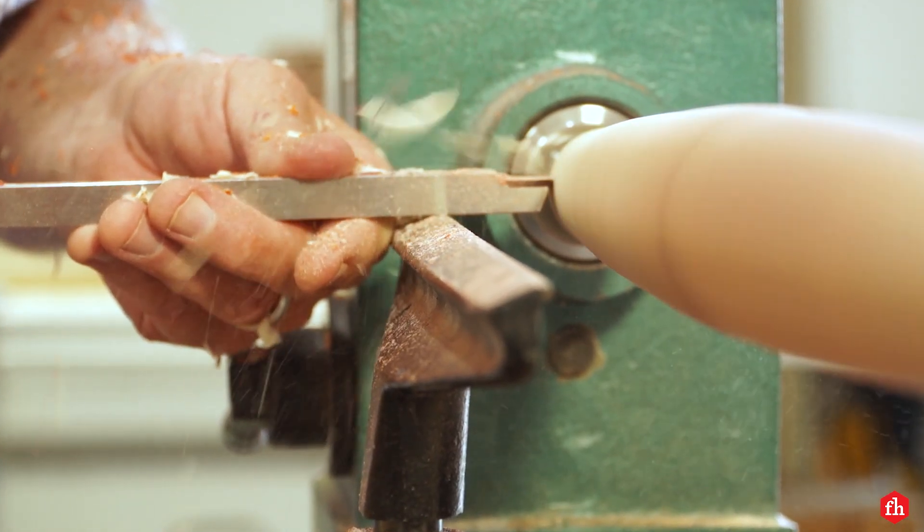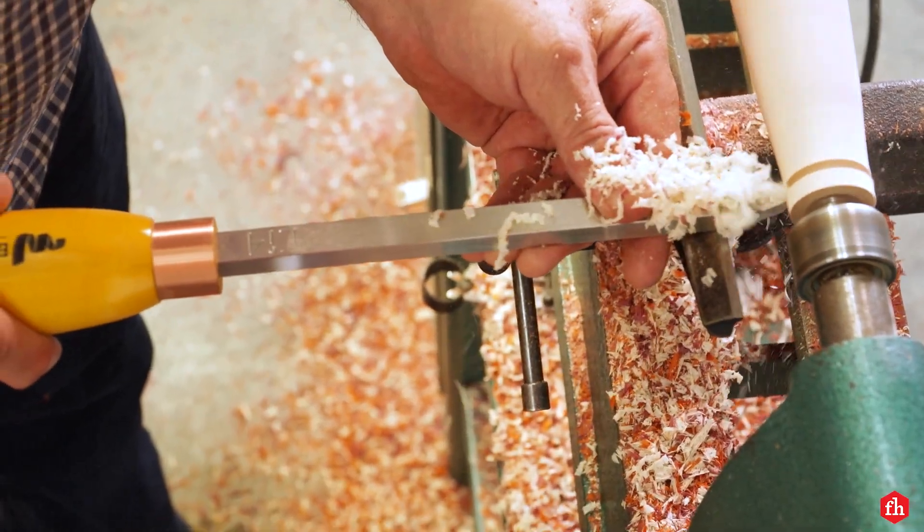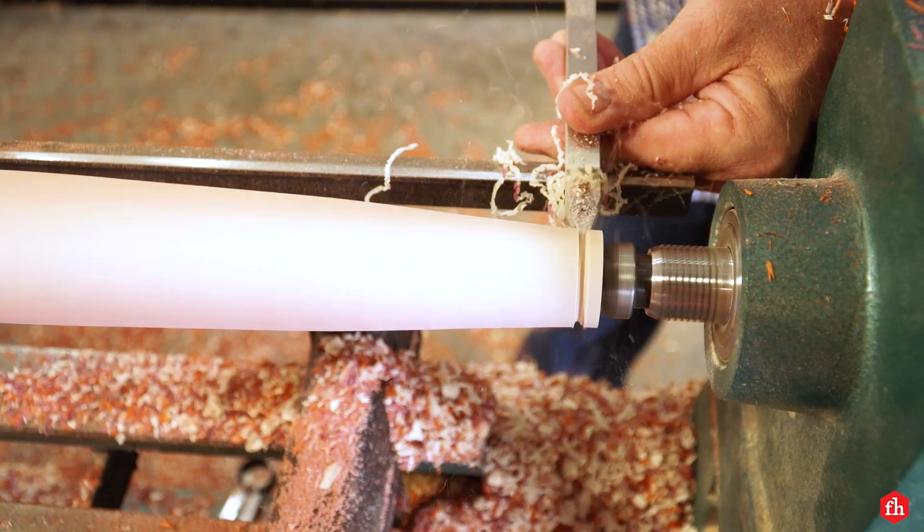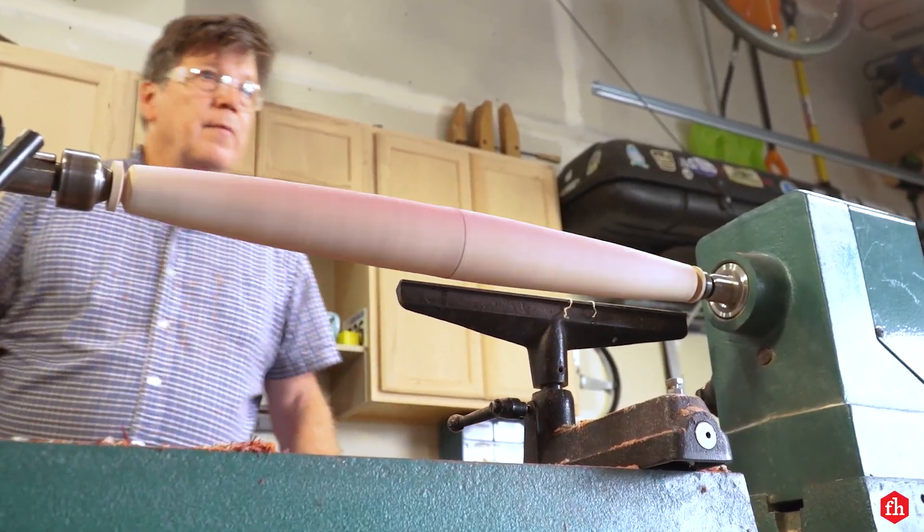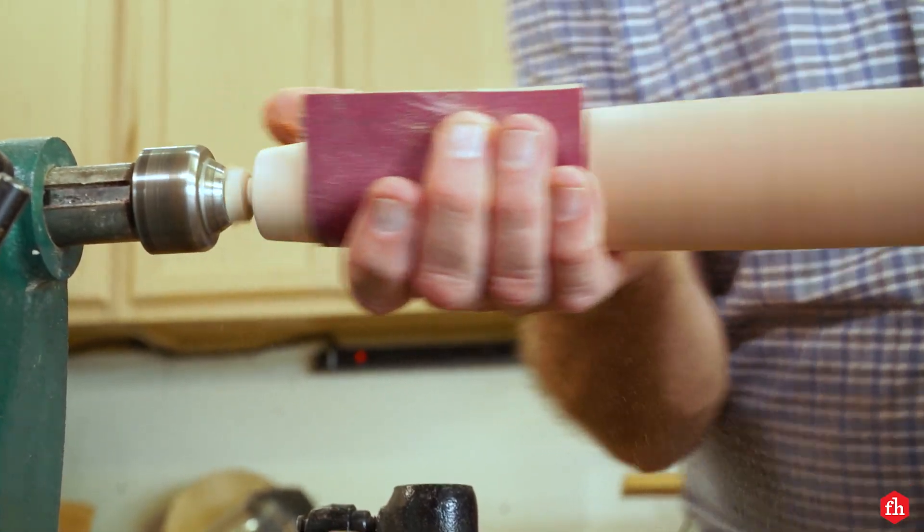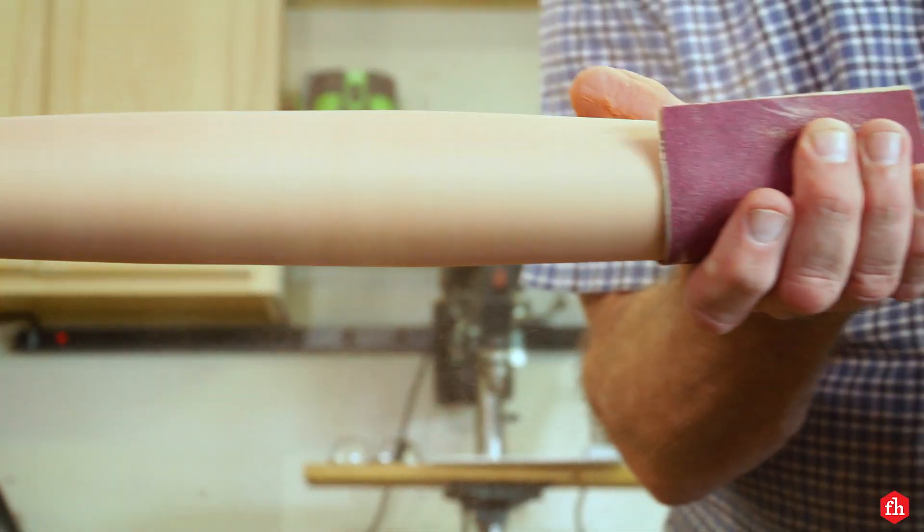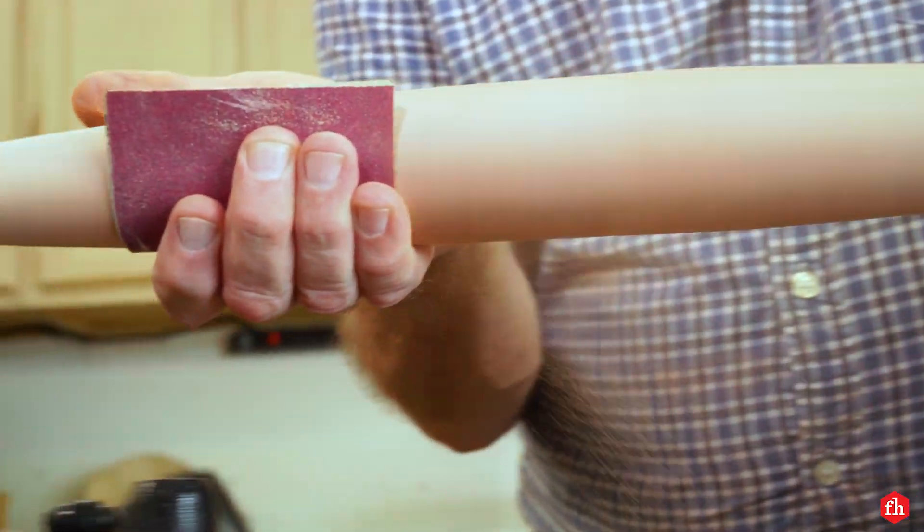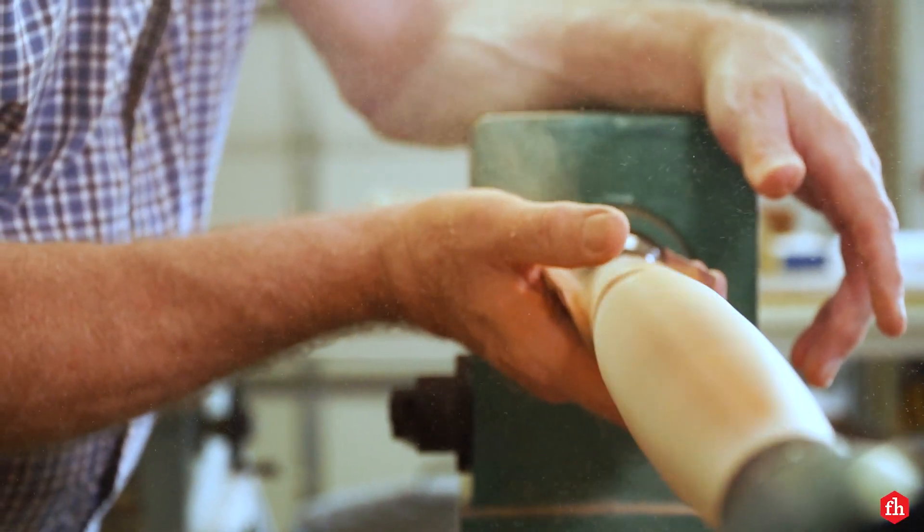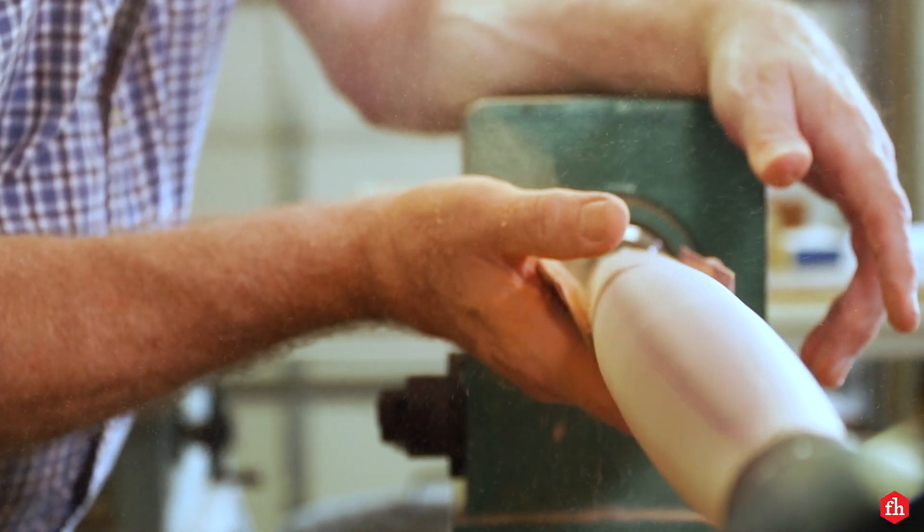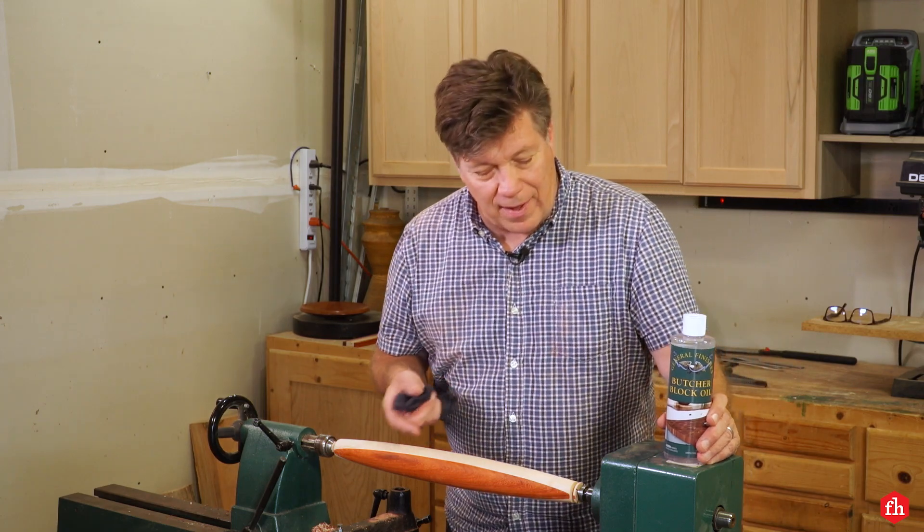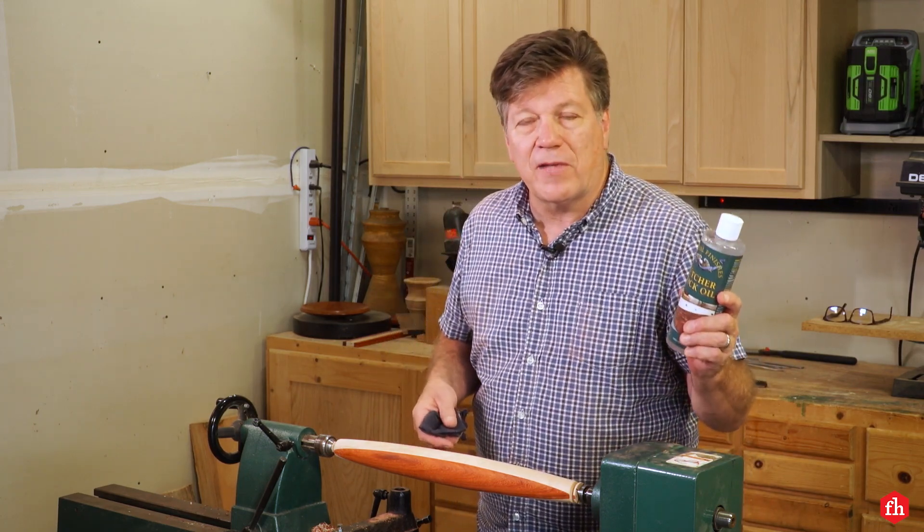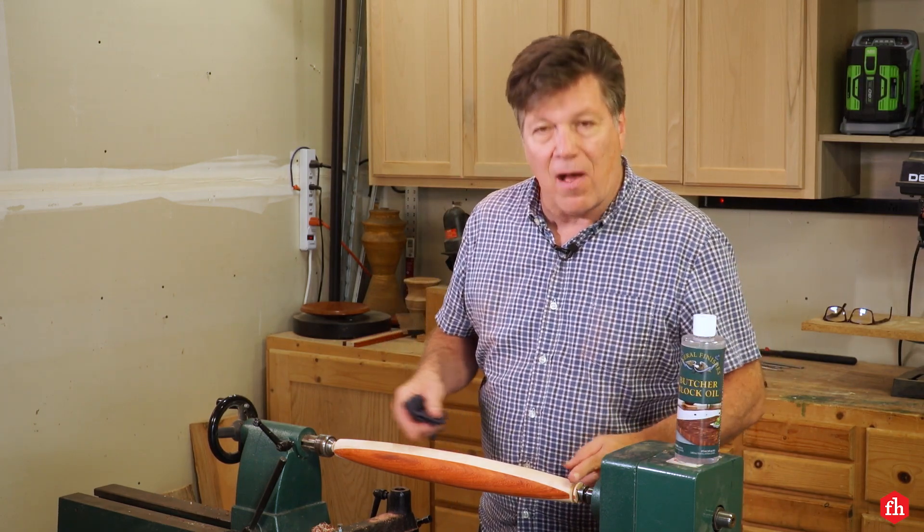Using the detailing tool, I shape both ends to how I want them to look. Then I move on to sanding the piece. All right, now I have it all sanded. All I have left is add some food safe oil and then I'll cut the ends off with a saw.